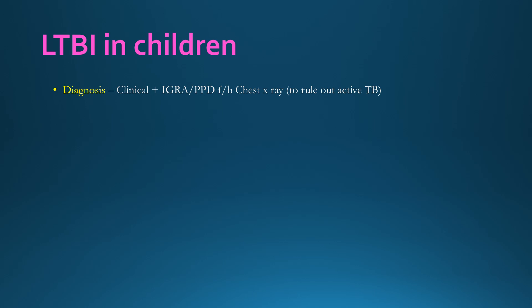To diagnose latent tuberculosis infection (LTBI), clinical suspicion is required. Indirect methods such as IGRA or TST — if positive, especially in the presence of risk factors — can indicate LTBI. Chest X-ray must be done to rule out active pulmonary tuberculosis. Treatment involves isoniazid and rifampicin daily for three months, along with pyridoxine supplementation at 10–25 mg per day.